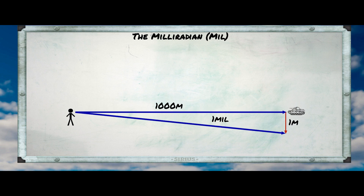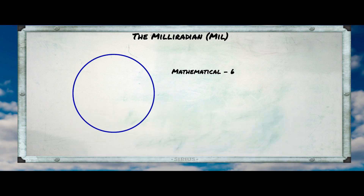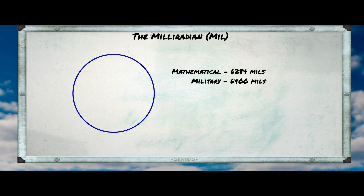The one small wrinkle is that according to the mathematical definition of a milliradian, there are 6,284 mils in a circle. The military, on the other hand, defines a mil as 1/6,400th of a circle, just so they can use a more round number and still retain the basic effect that at 1,000 meters, one mil equals a meter. So since there are 360 degrees in a circle, there are 17.44 mathematical milliradians in a degree and 17.77 military mils in a degree. The military has decided to keep the numbers round by just saying there are 17.5 mils in a degree — and that's what we're going to use.